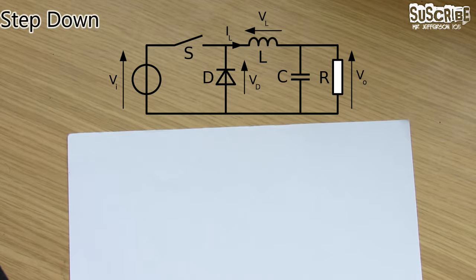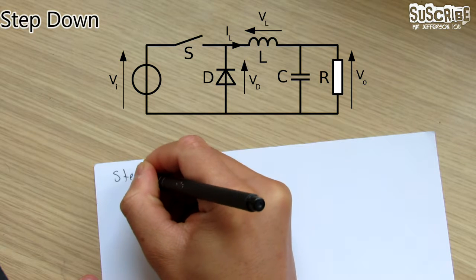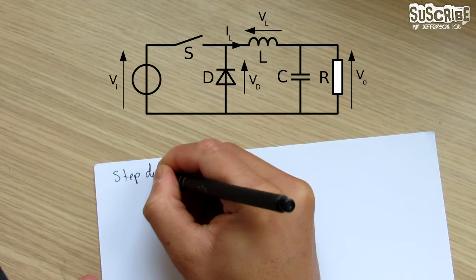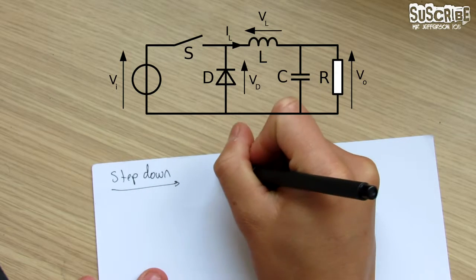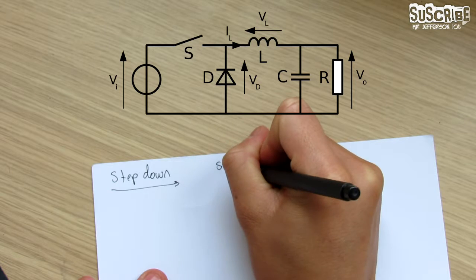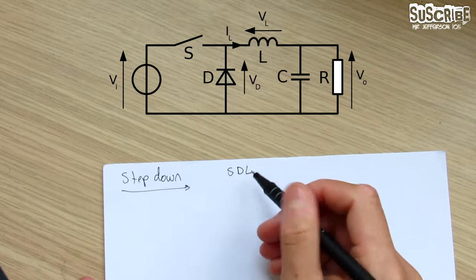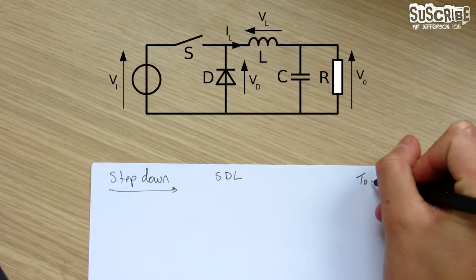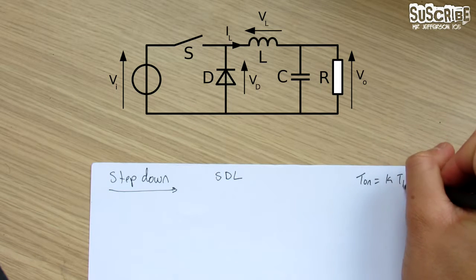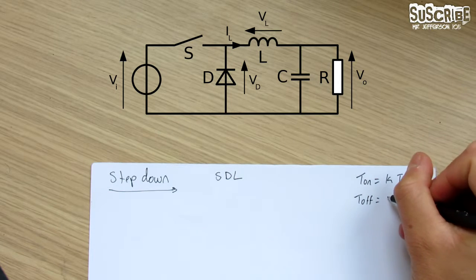Now let's go into the step-down converter. The way I remember it is by remembering SDL, because you have the Switch, the Diode, and the Inductor. Remember that the switch is the transistor. Something important we need in the equation is that the time on equals K·T_P and the time off equals (1 − K)·T_P.